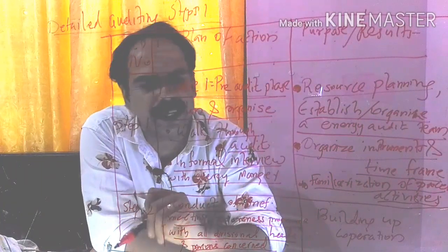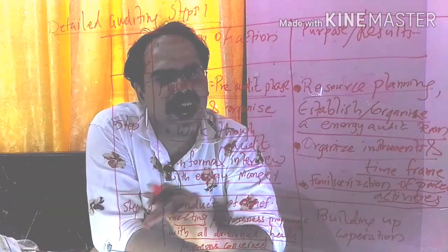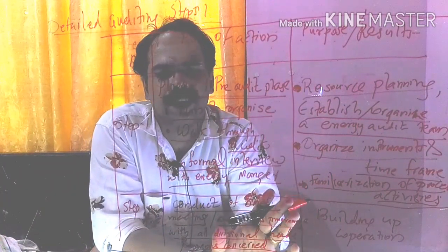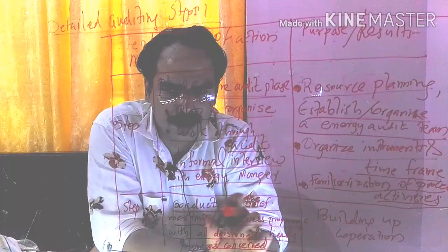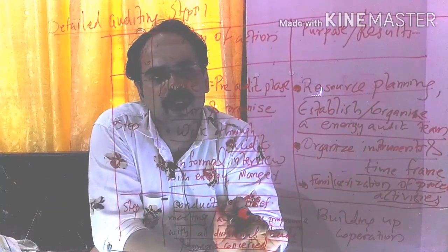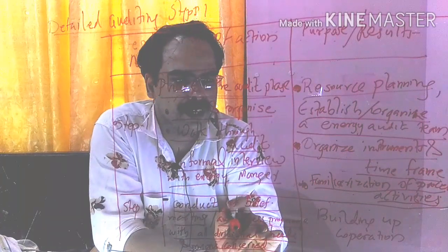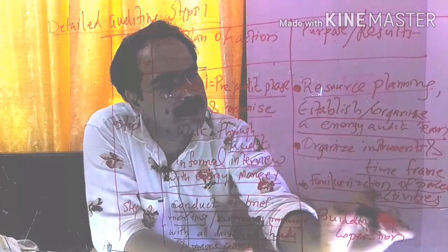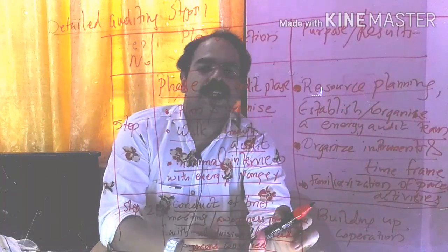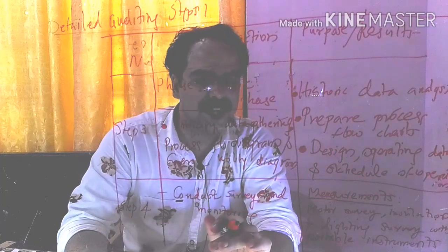In step two, there will be a brief meeting and an awareness program related to the energy audit team. In step one only informal meetings and talks happen, but in step two there is a brief meeting and awareness program, through which they can build cooperation — that means they can get cooperation from the industry.